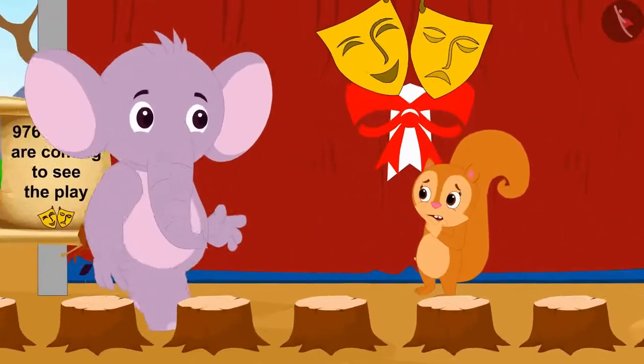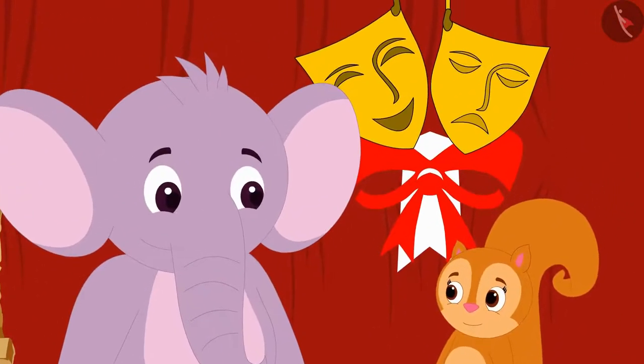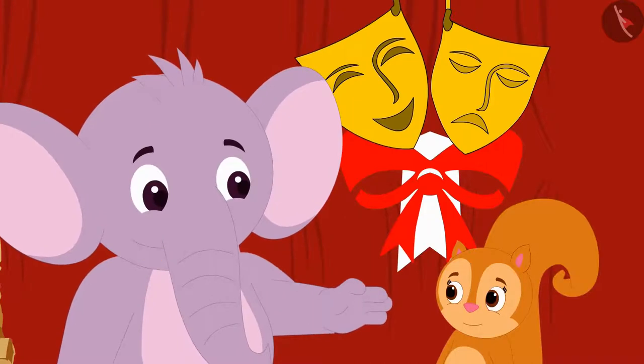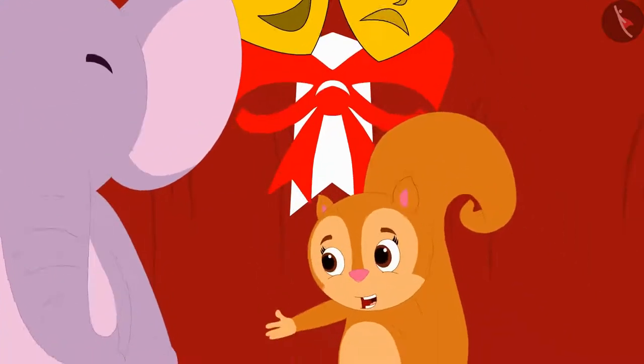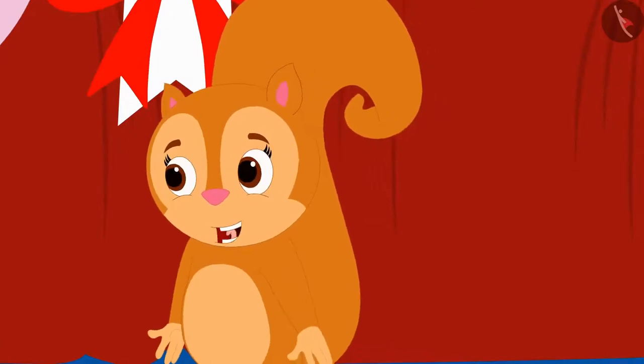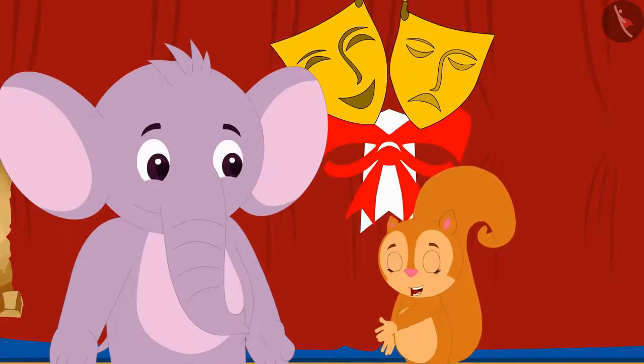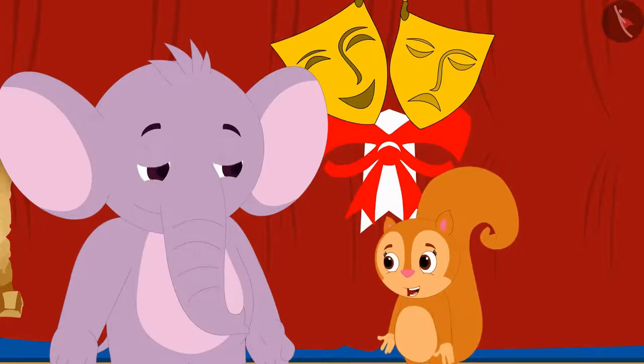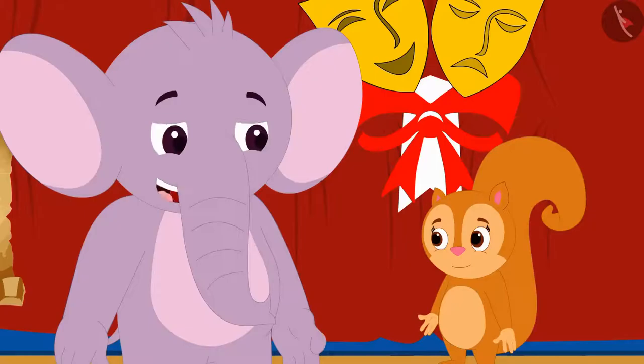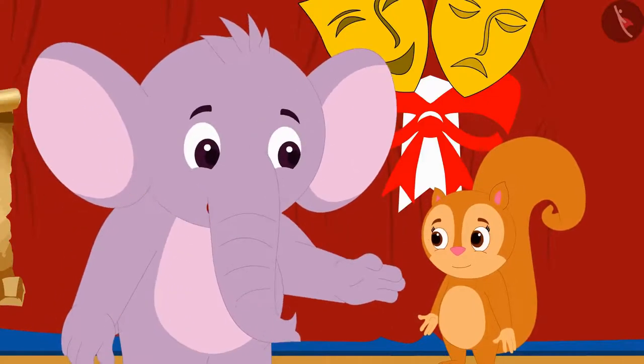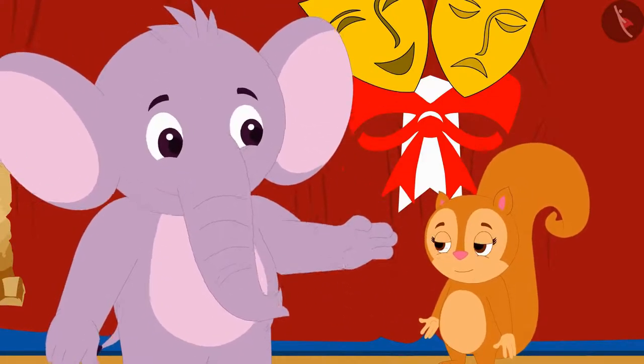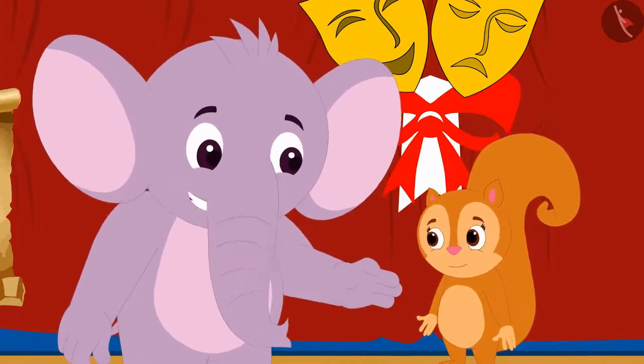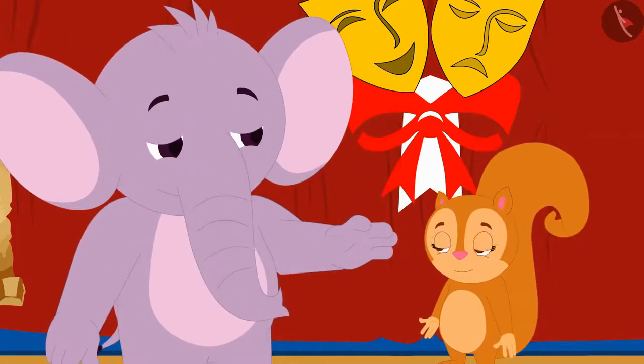Appu was then passing by. He asked Chanda, what are you doing? I am trying to figure out how many rows of eight chairs can I make so that I can divide the audience of 976 people in such a way that no chairs are left vacant, Chanda told Appu. You can find the answer by using the division method. Let's both use the division method to find the solution, Appu told Chanda.